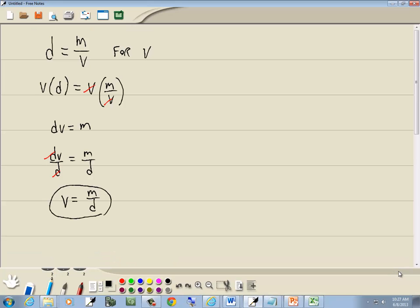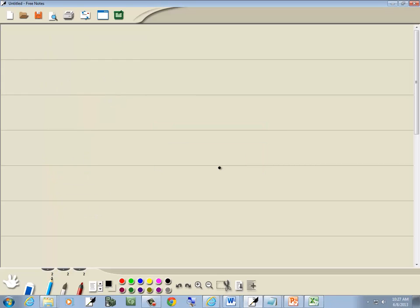So we got, oops, I guess I better clear my tablet. There we go. We got C is equal to 5 ninths times F minus 32. And we want to solve this for F.